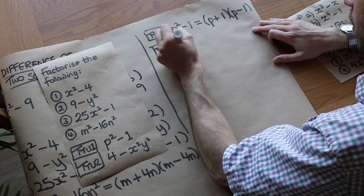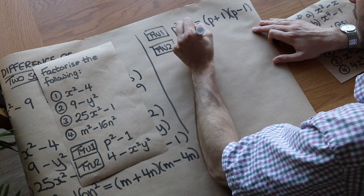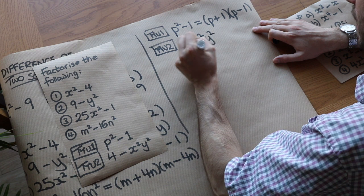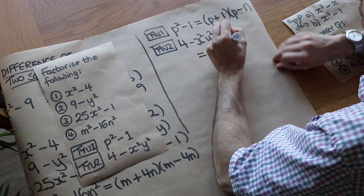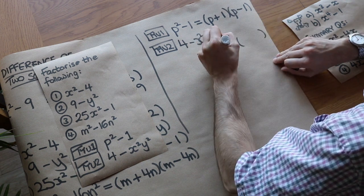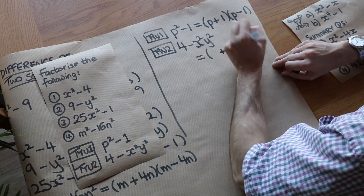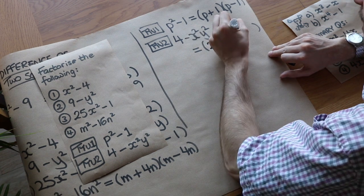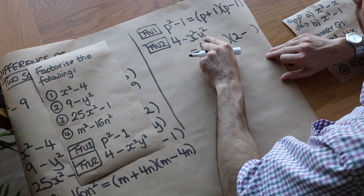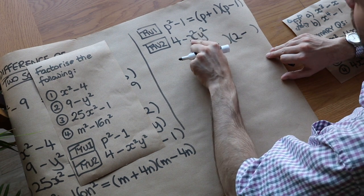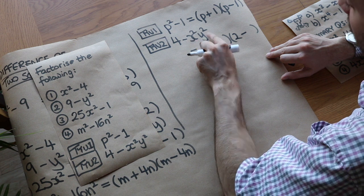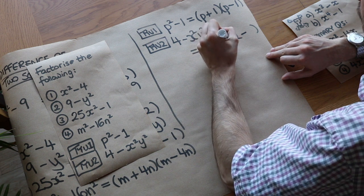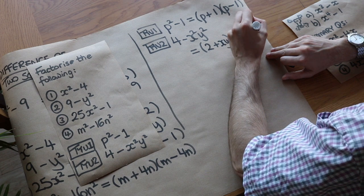The second one: 4 minus x squared y squared. Again, two brackets, one plus, one minus. The square root of 4 is 2, so we put 2 first. The square root of x squared y squared: the square root of x squared is x, and the square root of y squared is y, so it's xy. The answer is (2 + xy)(2 − xy).